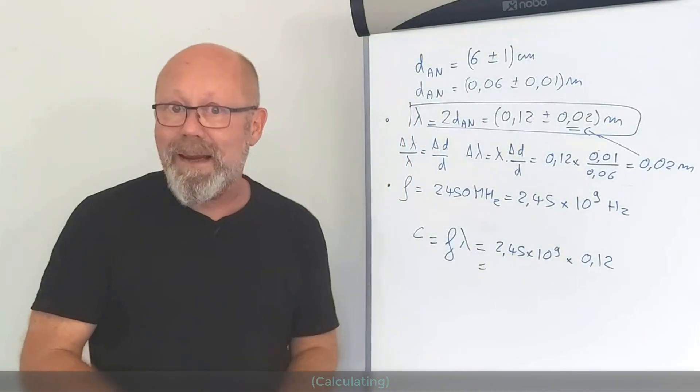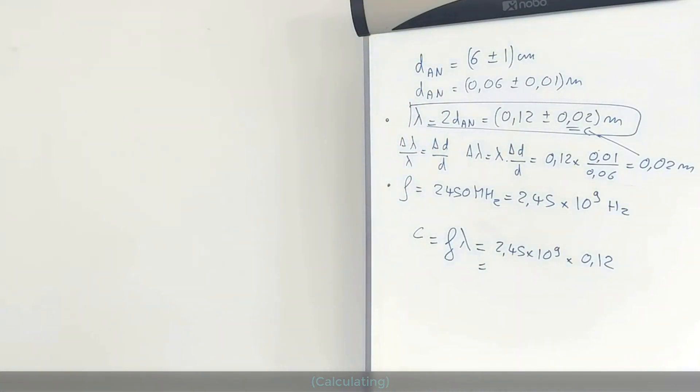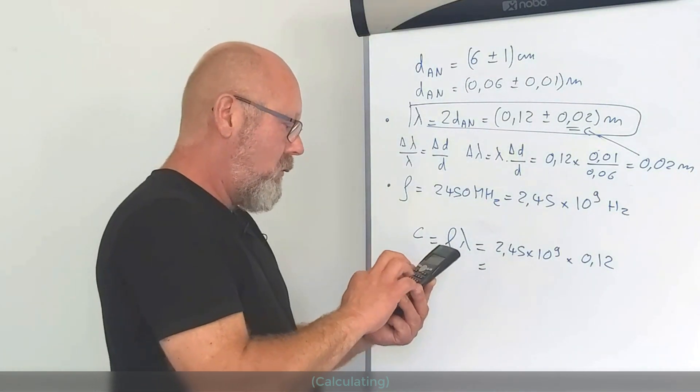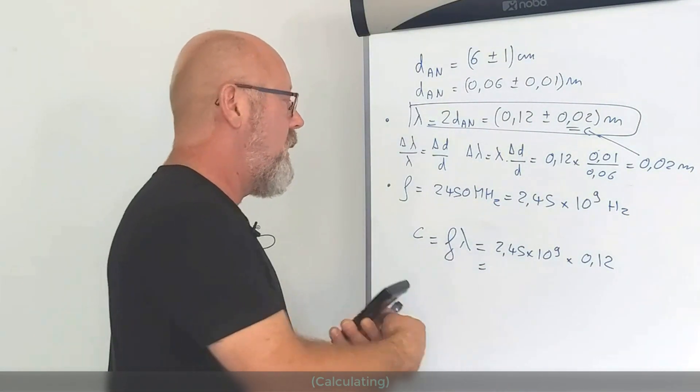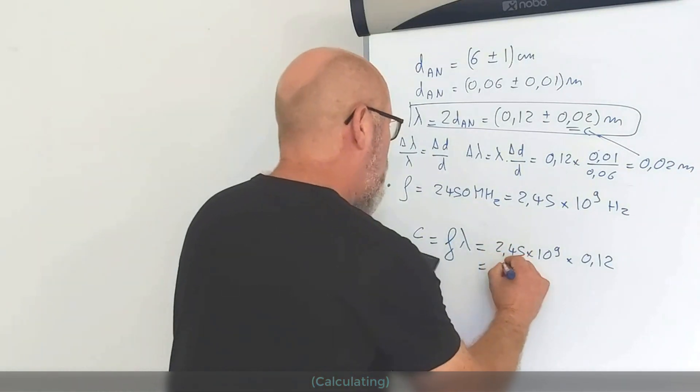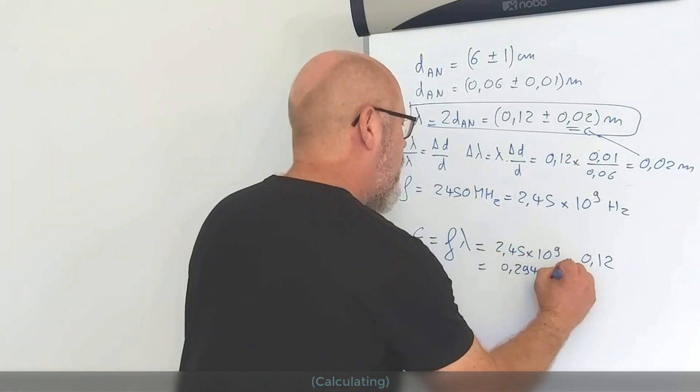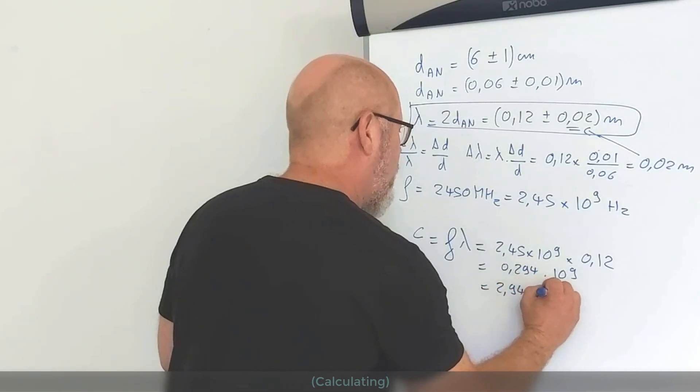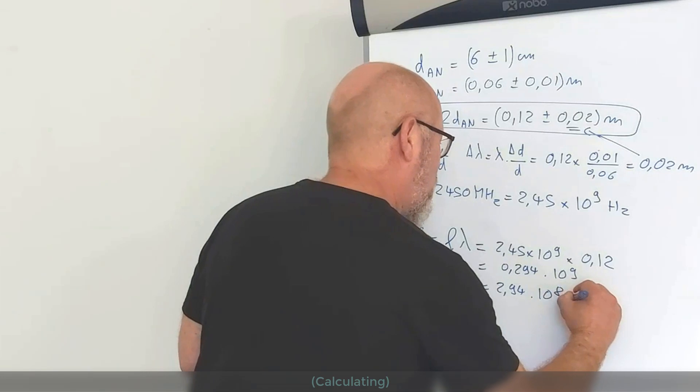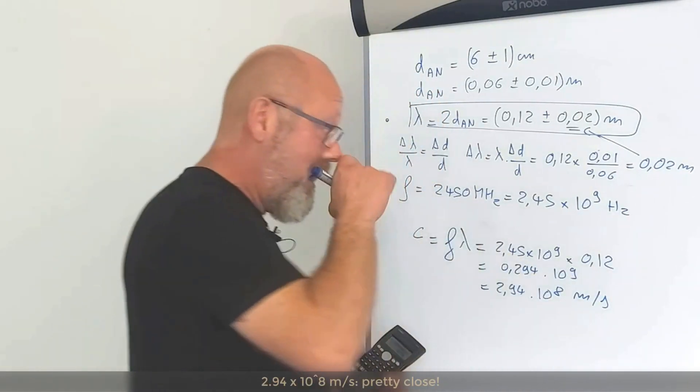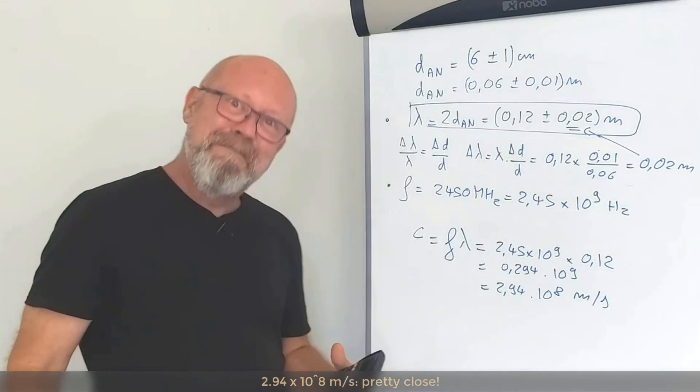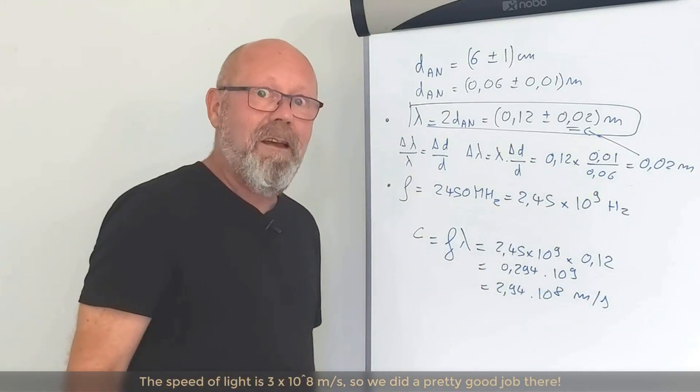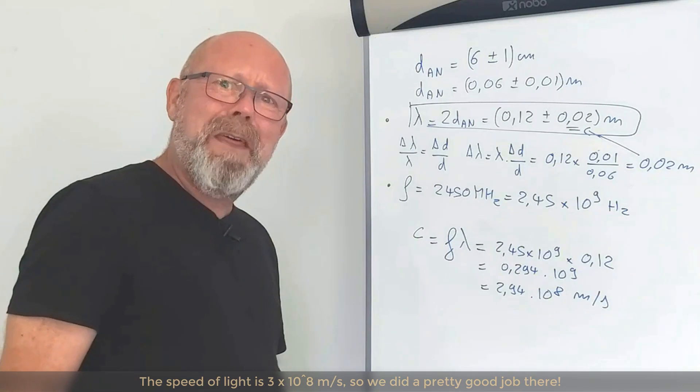I've got 0.12 by 2.45. That gives me 0.294 by 10 to the 9. Which is 2.94 by 10 to the 8 meters per second. Pretty close! The speed of light is 3 by 10 to the 8 meters per second. So, we did a pretty good job there.